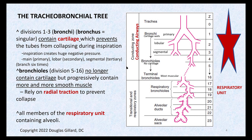Then the bronchioles, after anywhere from 5 to 16 divisions, get more and more muscular as they get smaller and smaller. The very last division is called the terminal bronchiole — you should definitely know that one. That is the last member of the conducting airways. It has more smooth muscle in the walls than anything else — it's almost like an arteriole.